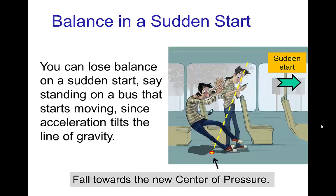Another example: let's say you're standing on a bus that's not moving, and suddenly the bus starts moving forward — it accelerates towards screen right. The character that was originally in a balanced pose now loses balance because the line of gravity has tilted. The center of pressure is now behind the character, no longer under the base of support around the feet, so the character falls towards the center of pressure.